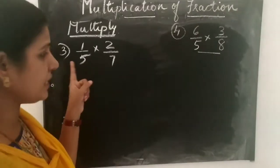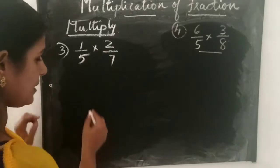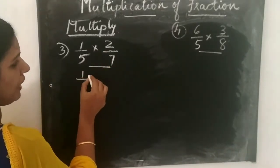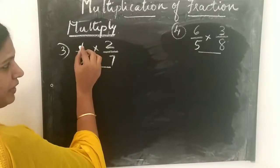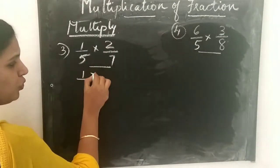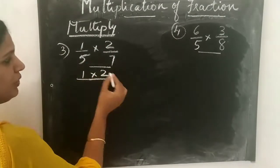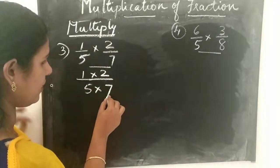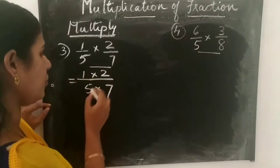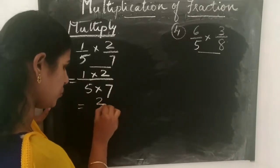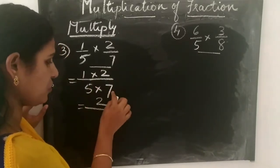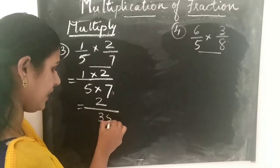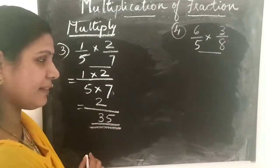The third question is 1 by 5 into 2 by 7. Here 1 by 5 into 2 by 7, so we write 1 into 2 divided by 5 into 7. Now 1 into 2 is 2, and 5 into 7 is 35. So we get the answer as 2 by 35.